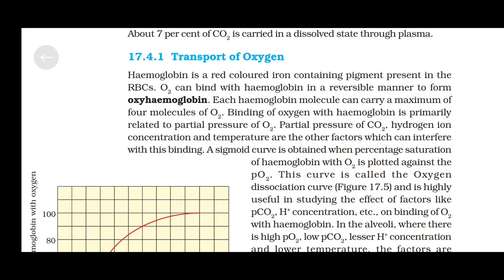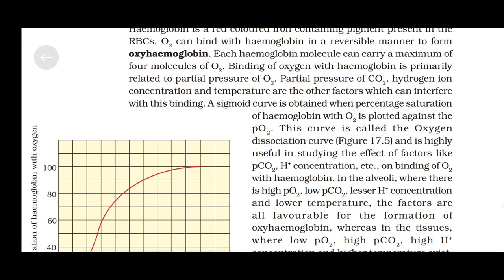Transport of Oxygen: Hemoglobin is a red-colored iron-containing pigment present in the RBCs. Oxygen can bind with hemoglobin in a reversible manner to form oxyhemoglobin. Each hemoglobin molecule can carry a maximum of 4 molecules of O2. Binding of oxygen with hemoglobin is primarily related to partial pressure of O2. Partial pressure of CO2, hydrogen ion concentration, and temperature are other factors which can interfere with this binding. A sigmoid curve is obtained when percentage saturation of hemoglobin with O2 is plotted against the pressure of O2.